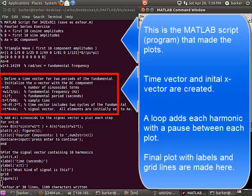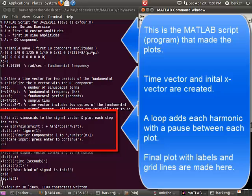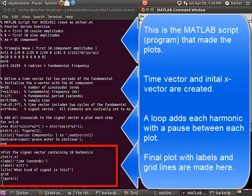The time vector and initial X vector are created. A loop adds each harmonic with a pause between each plot. The final plot with labels and grid lines are made here.